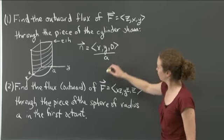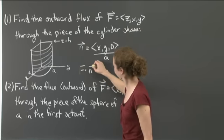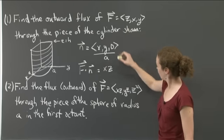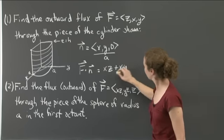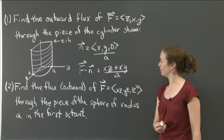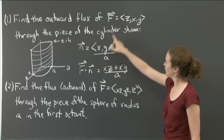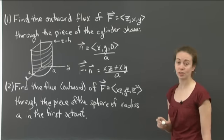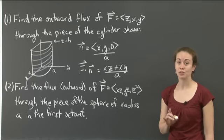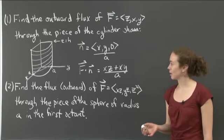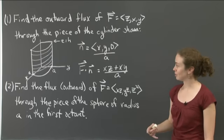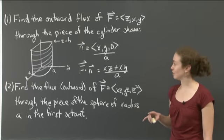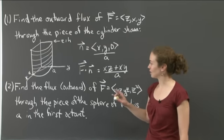When I dot the normal with f, I get f dot n equals (xz + xy) divided by a — taking each component: x times z, y times z, 0 times y, summed and divided by a. A natural parameterization is cylindrical coordinates since we're on a cylinder. The radius is fixed, so I'm interested in changes in theta and z. In this parameterization, ds equals a d-theta dz.